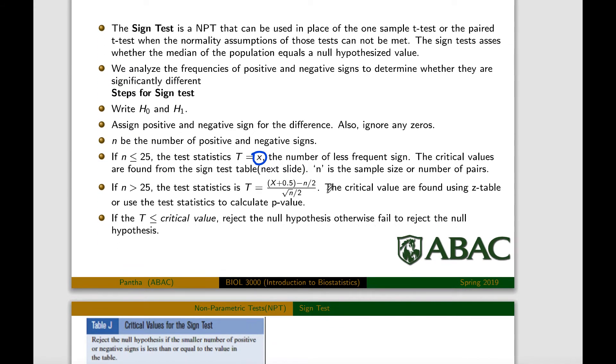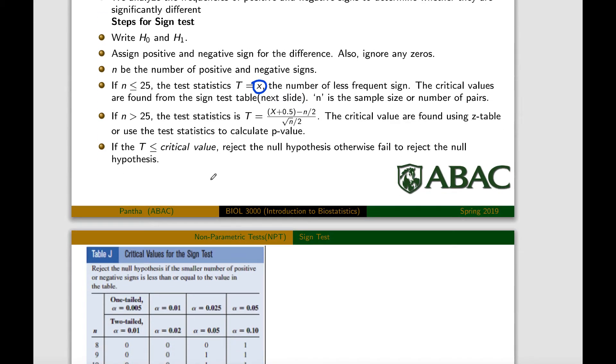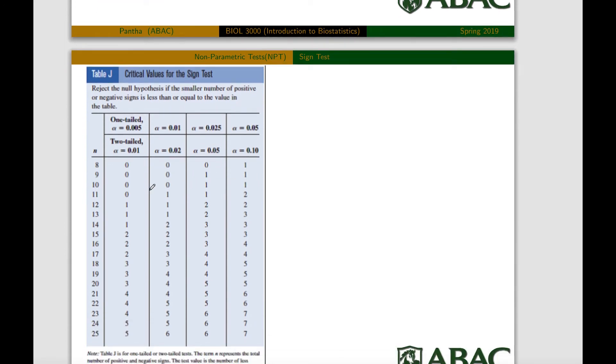And then to find out the critical value, we use this table in the next slide. And what is the decision is, if the test value is less than the critical value, we reject the null hypothesis. Otherwise, we fail to reject the null hypothesis. So the critical value can be found using this table. We call the sign test table for the sample size, and these are the one tail or two tail test, and these are the alpha values.